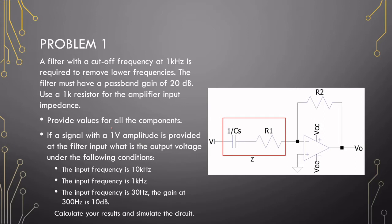Provide all components and then insert a 1 volt signal and find the outputs for the following conditions: when we have a 10 kHz input, 1 kHz input, and 30 Hz input. The extra information here is that at 300 Hz we have a gain of 10 dB. Let's see if you can figure out the output voltages and do a simulation. Pause the video.